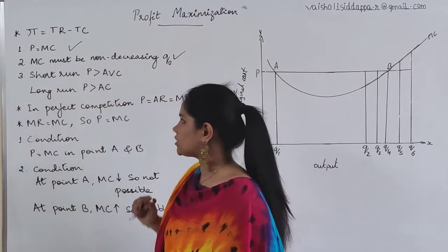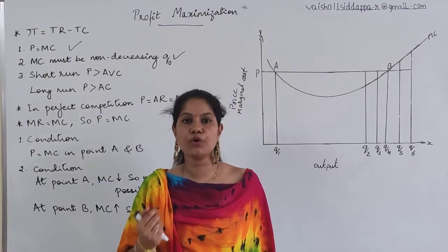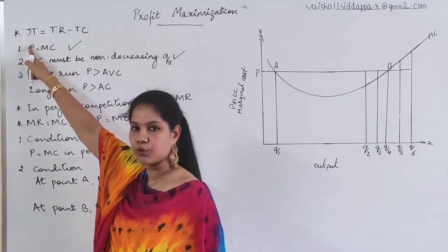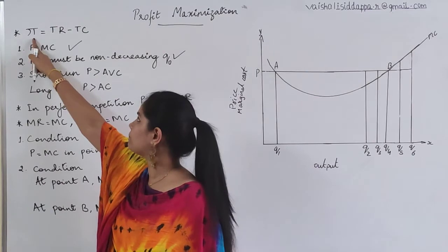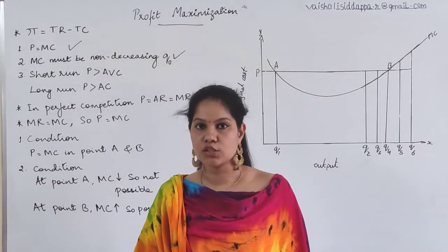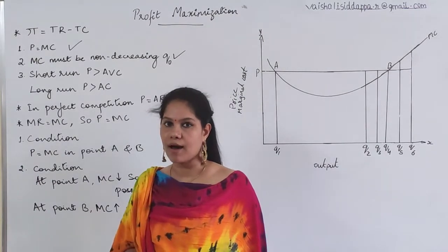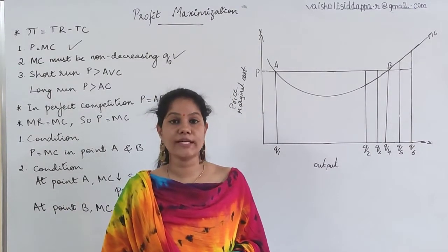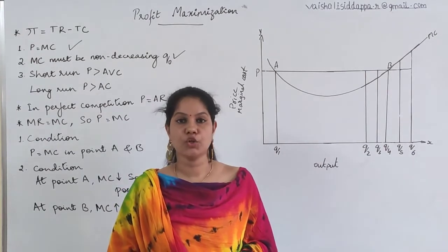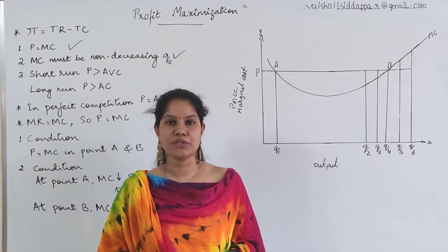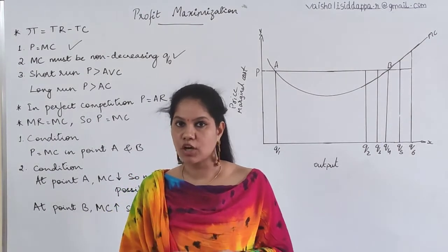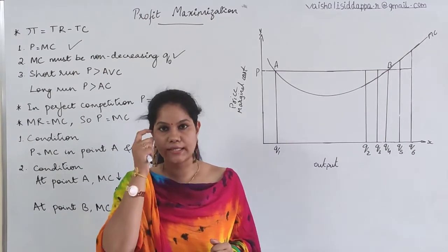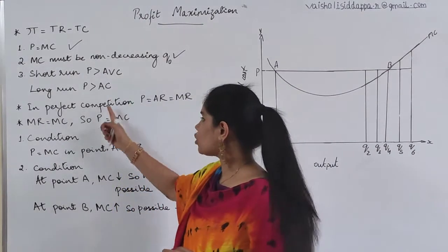If you want to understand these conditions, first understand what exactly profit is and how you measure it. To measure profit, you have a formula using pi (π), which represents profit. Pi equals TR minus TC — total revenue minus total cost. Whatever total revenues you receive, if you subtract the total cost — the expenditure made to produce goods — you get the profit.